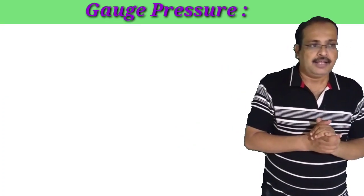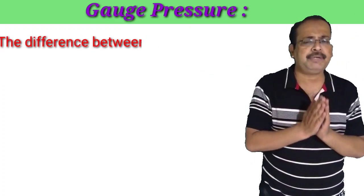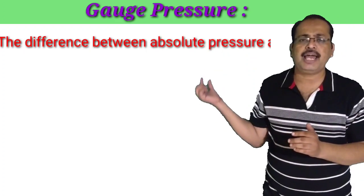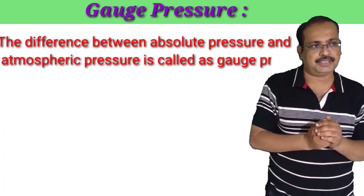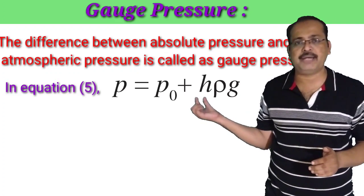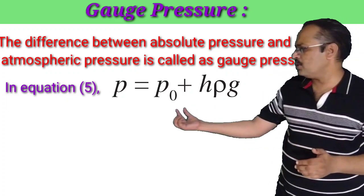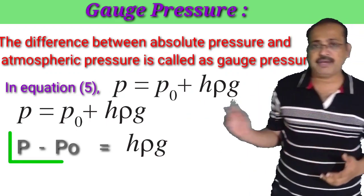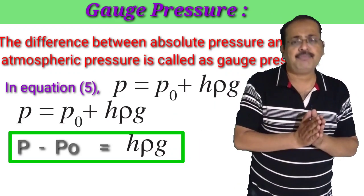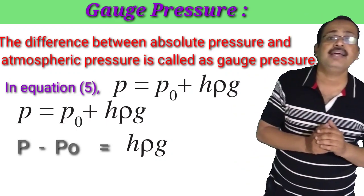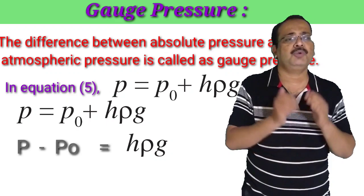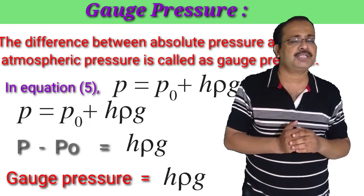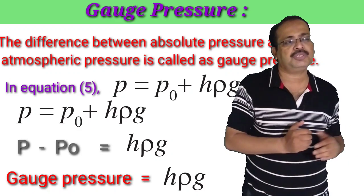Gauge pressure is defined as the difference between absolute pressure and atmospheric pressure. From equation 5, P minus P0 equals h times rho times g. Therefore gauge pressure is equal to h times rho times g. This is equation number 6, the expression for gauge pressure.